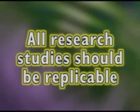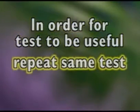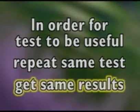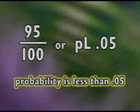All research studies should be replicable. In other words, other researchers should be able to repeat the experiment so the results can be further proved or disproved. Psychologists say that in order for a test to be useful in predicting behavior, you should be able to repeat the same experiment and get the same results 95 out of 100 times, or a probability of less than .05.